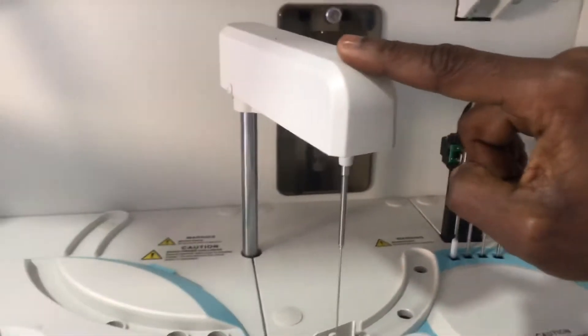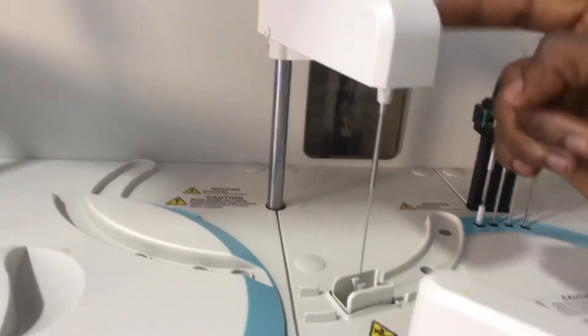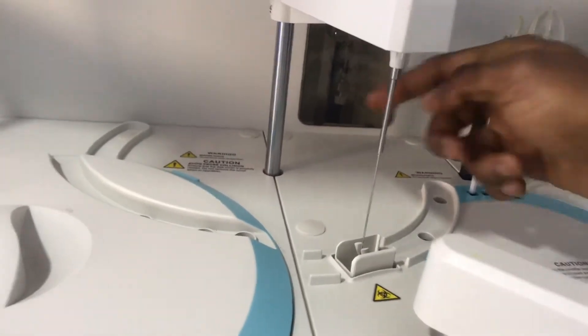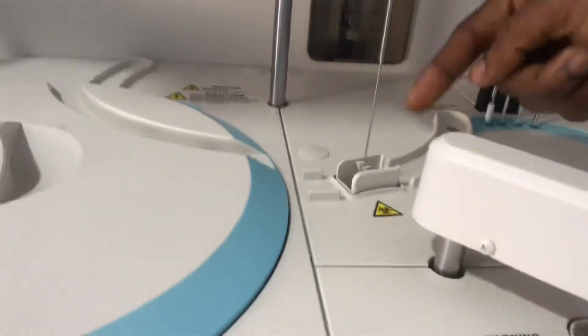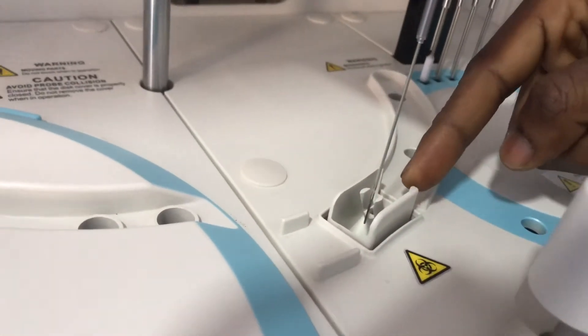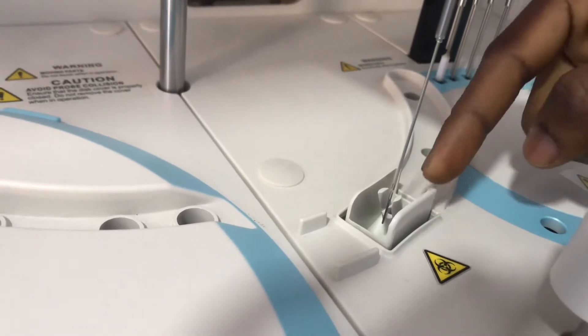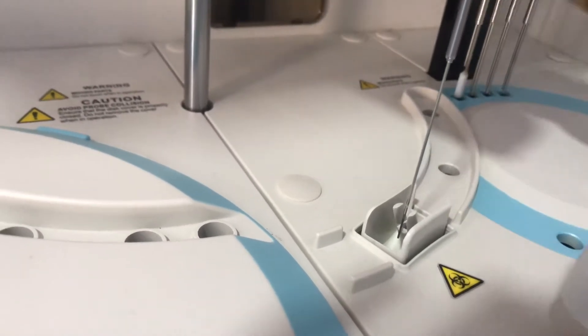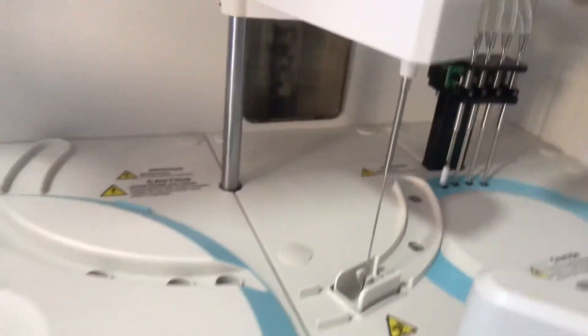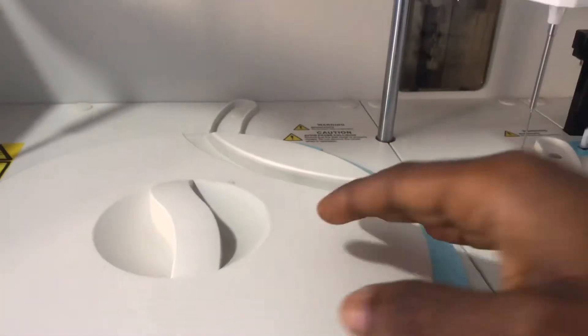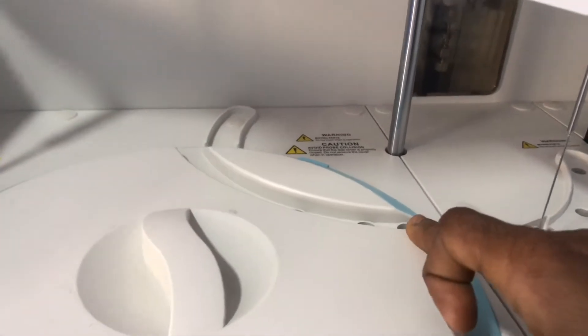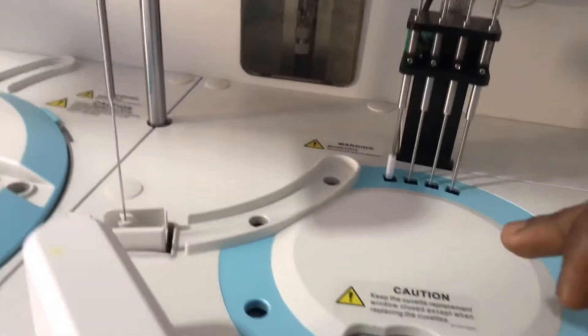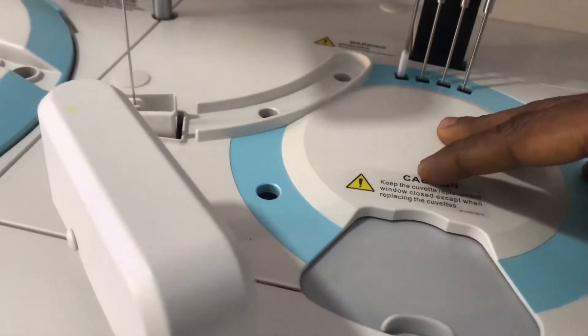Now let's focus on the dispenser assembly. This is basically the dispenser assembly—this is the arm, this is the probe, and this is the rotor. In here we have a wash well. What the wash well does is it washes the interior and exterior of the probe. Basically, what the probe does is it picks the sample and the reagent and then moves them to the reaction carousel where you have the cuvette to allow the reaction to occur.